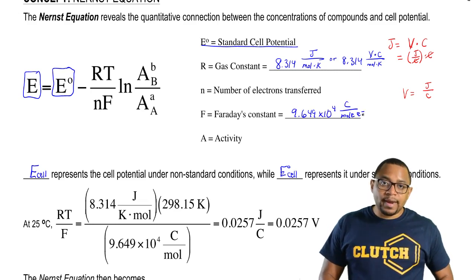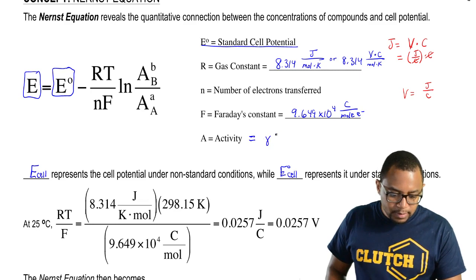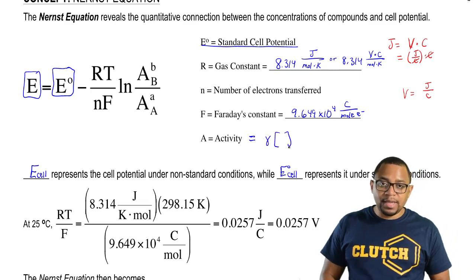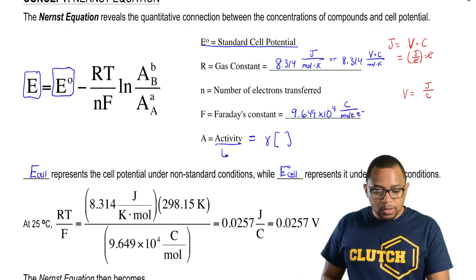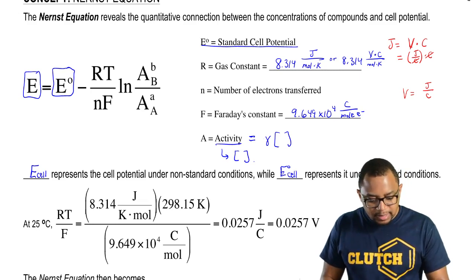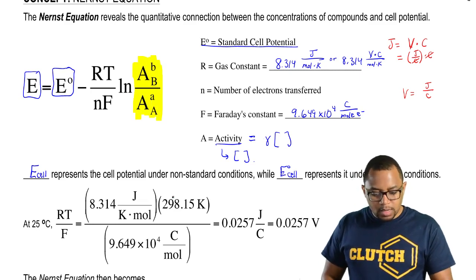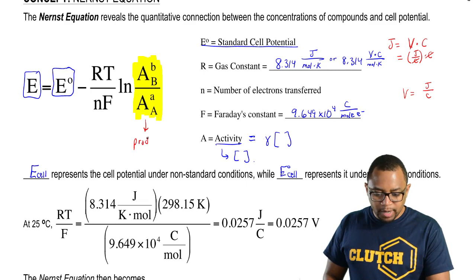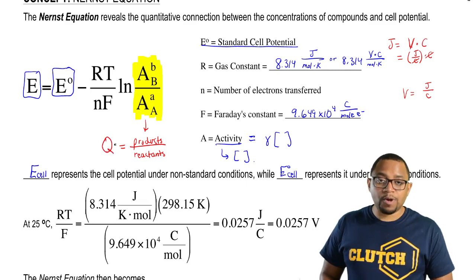A represents our activities. Activity here would be our activity coefficient times the concentration of the ion if necessary. Many times we may not be given a coefficient, so you can substitute in concentration for that value. This expression represents products over reactants in terms of our redox reaction, and it equals Q, our reaction quotient.